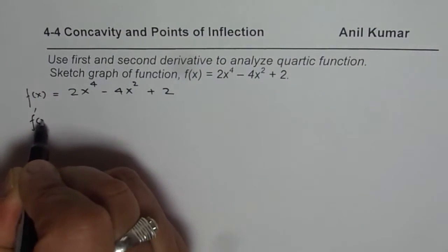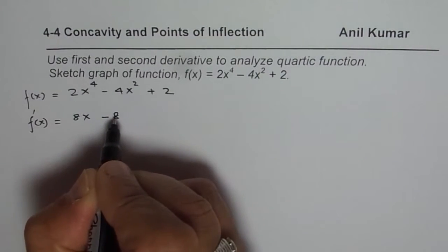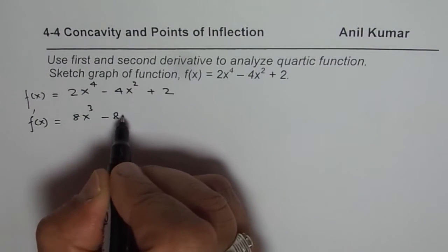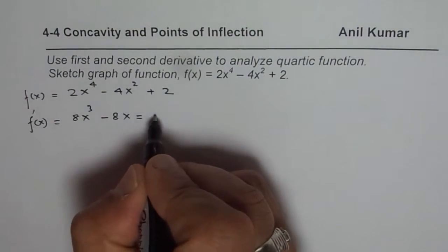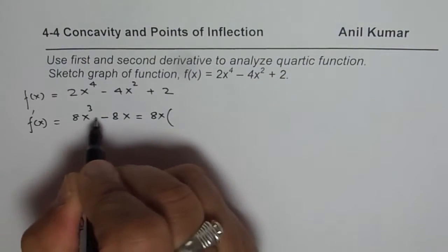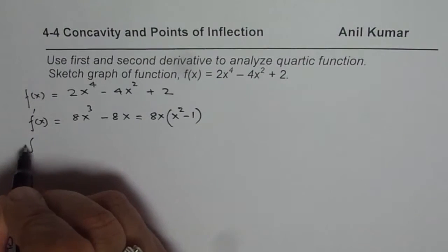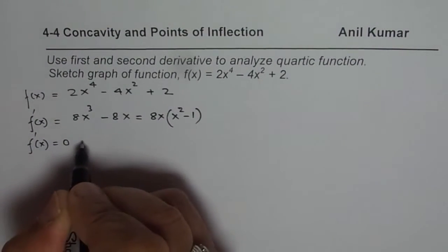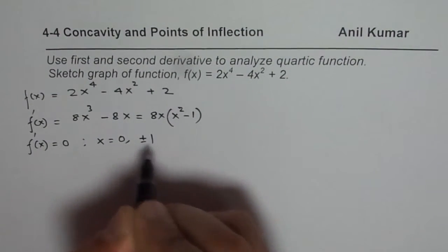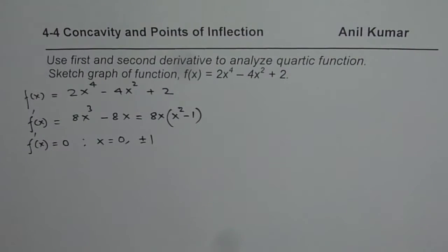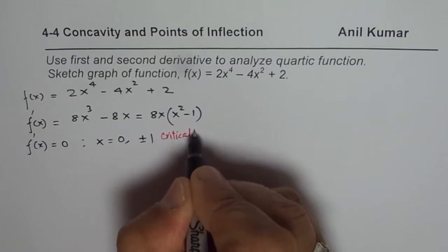Let us find its derivative. The derivative of the function is 8x³ - 8x. We can factor out 8x as a common factor and get 8x(x² - 1), so the first derivative is 0 for x = 0 and x = ±1. So we have three critical numbers.